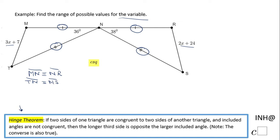So basically, the first part of the hinge theorem is accomplished. The hinge theorem says if the included angles are not congruent—yes, included angles 36° and 38° are not congruent—then the longer third side is opposite the larger included angle.